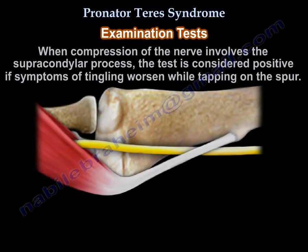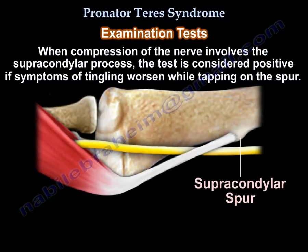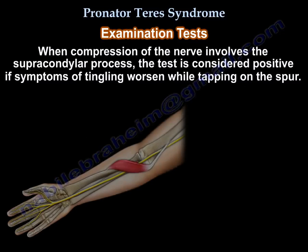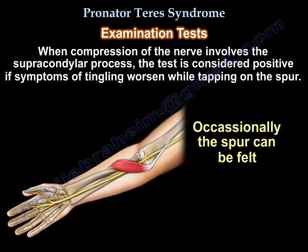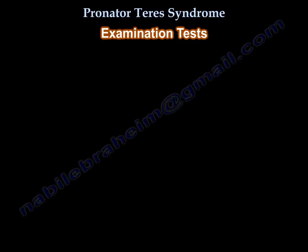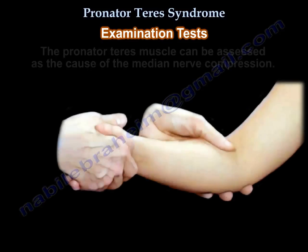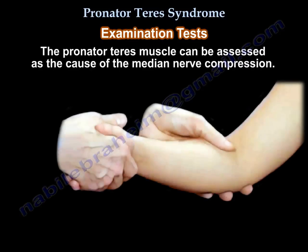When compression of the nerve involves the supracondylar process, the test is considered positive if symptoms of tingling worsen while tapping on the spur. Occasionally the spur can be felt. The pronator teres muscle can be assessed as the cause of the median nerve compression.